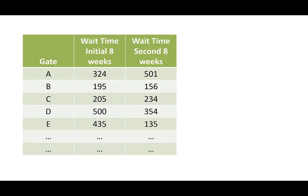The data would look something like this. At each one of the eight gates, they would have one column with the total wait time for those initial eight weeks when they used the normal line queuing policies. And then they would have another column of data showing when they had cast queuing in place, what the total wait time was — that is, how long people were having to wait more than 10 minutes.